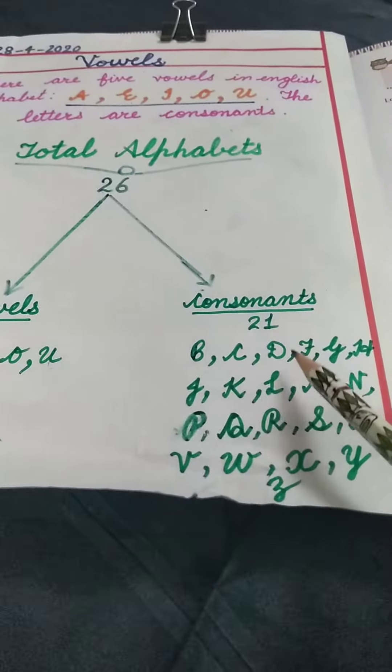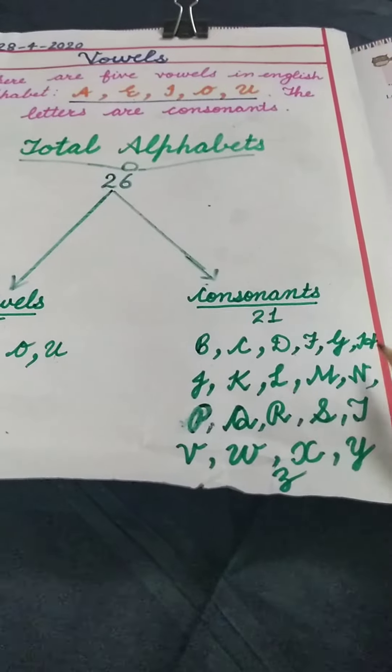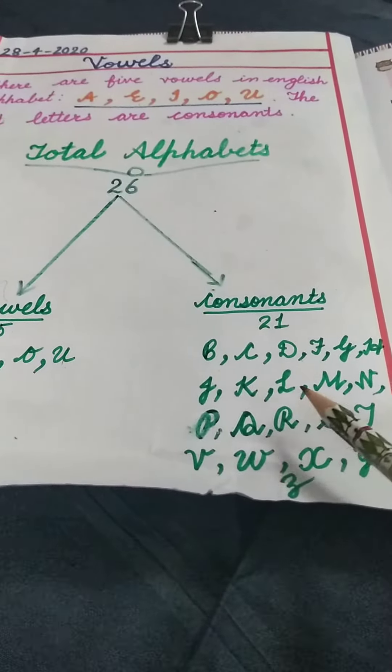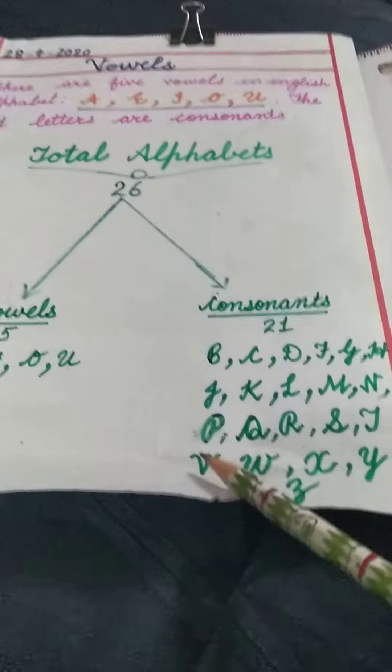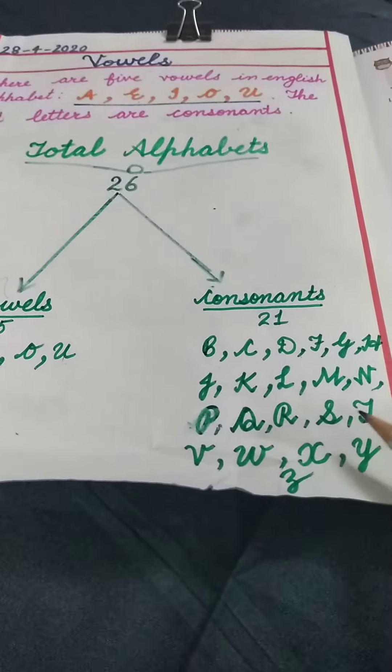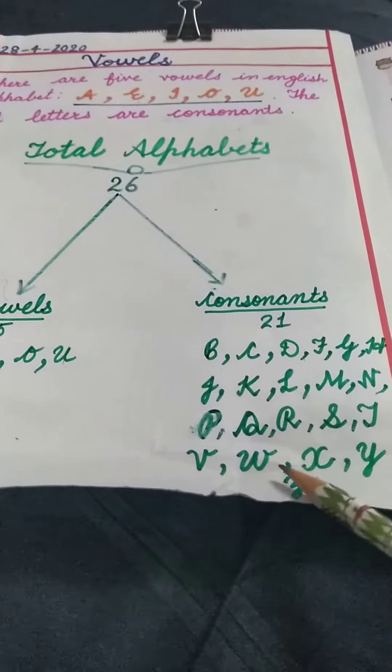...B, C, D, F, G, H, J, K, L, M, N, P, Q, R, S, T, V, W, X, Y, Z. These are consonants.